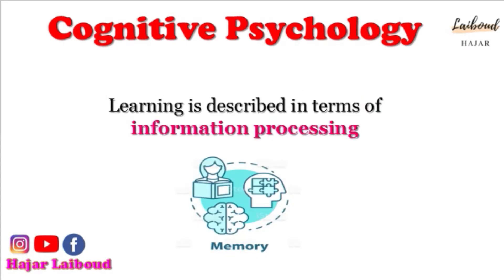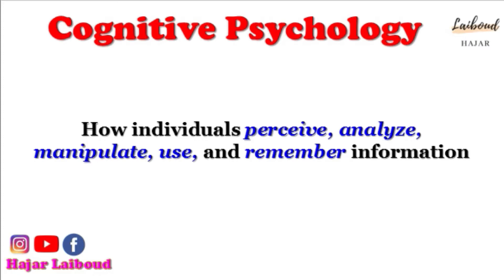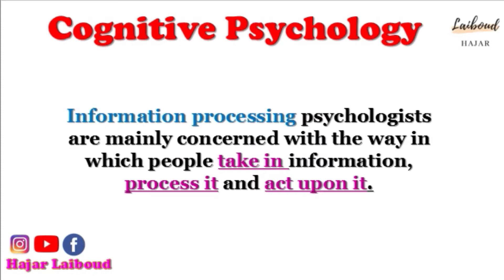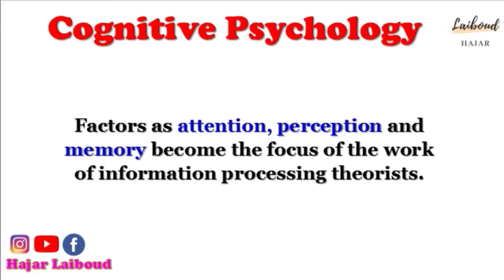In some cognitive learning theories, learning is described in terms of information processing — meaning how individuals perceive, analyze, manipulate, use, and remember information. Information processing psychologists are mainly concerned with the way in which people take in information, process it, and act upon it. Factors such as attention, perception, and memory become the focus of information processing theorists, who usually construct models to account for the way the human mind works.